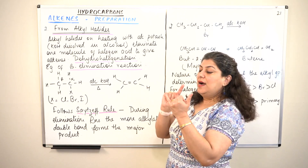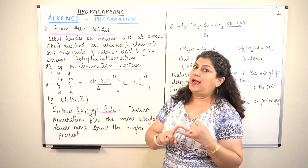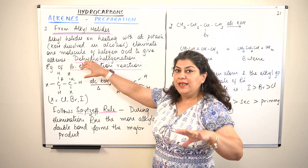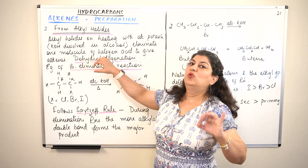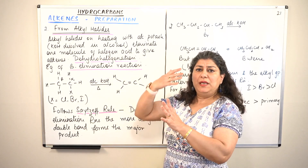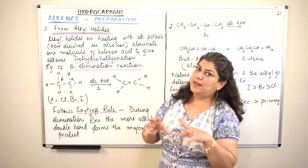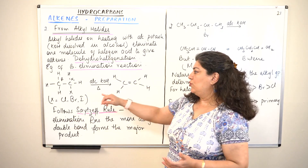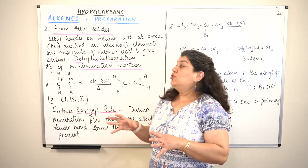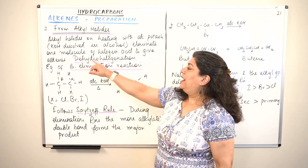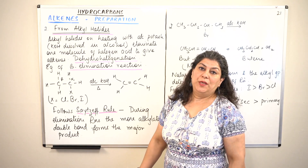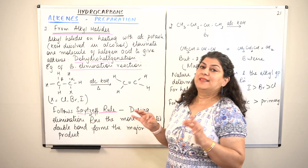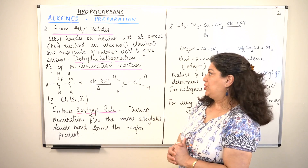Since a hydrogen and a halogen are being lost, this reaction is known as dehydrohalogenation. 'De' means removal, 'hydro' means hydrogen, and 'halogen' is halogen — it could be chlorine, bromine, or iodine. So it is the removal of a hydrogen and a halogen, and this reaction is named dehydrohalogenation.